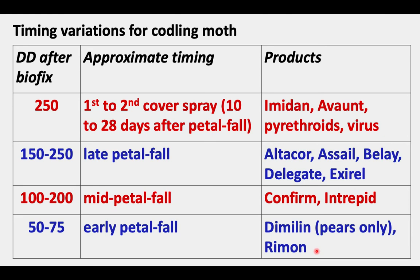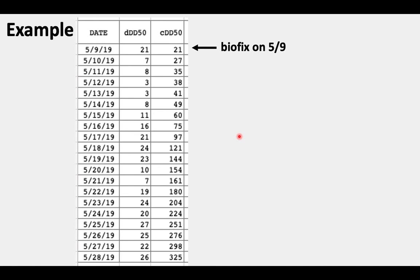Dimilin is only available on pears, not apples. But Rhyno is a product that is used quite often on apples. The idea of that early timing with Rhyno is that instead of targeting the eggs hatching, you want to put it down on the leaf so the eggs are deposited on top of the Rhyno residue.